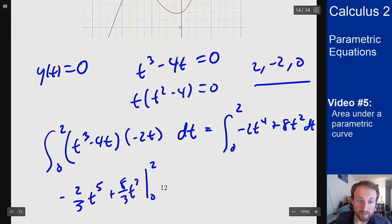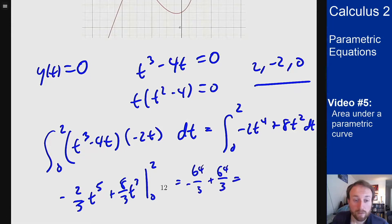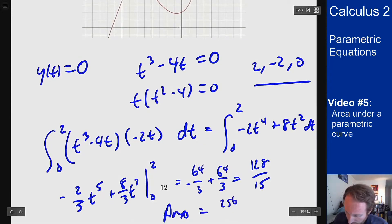Plugging in zero gives zero. I can plug in two and I get a 64 over 5 with a minus sign plus 64 over 3, which gives me 128 over 15, which is half of my area because that was one of the loops. For the second loop I double this, so the actual area is 256 over 15.